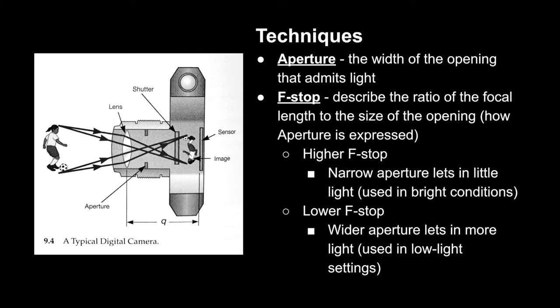The f-stop is a ratio of the focal length to the size of the opening. A higher f-stop will have a narrow aperture, which lets in very little light, and you use this in bright conditions — for example, on a really sunny day you don't want to overexpose your film. The inverse is also true: a lower f-stop has a wider aperture, letting in more light, and this is used in low light settings.